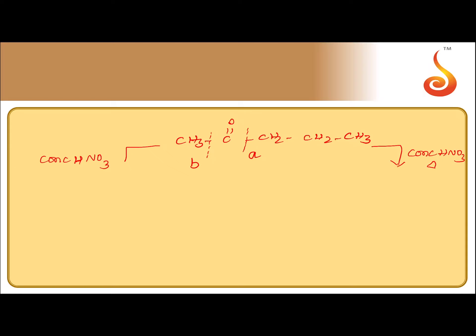If bond A is cleaved, the C=O group goes with the methyl group, giving CH3COOH (ethanoic acid). The other product has a propyl group — CH3CH2CH2COOH — giving propanoic acid. So bond A cleavage gives ethanoic acid and propanoic acid.